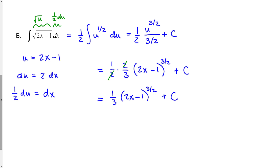If you're ever uncertain whether your final answer is correct, you can always check by taking the derivative of the function you just found using the chain rule. It should match what you started with, and if it does, you know for a fact that you have the correct answer.